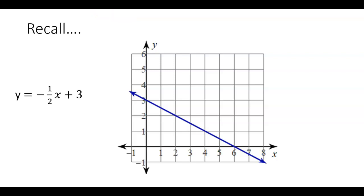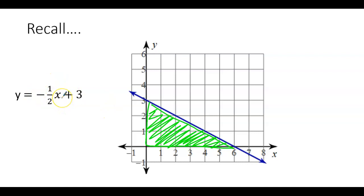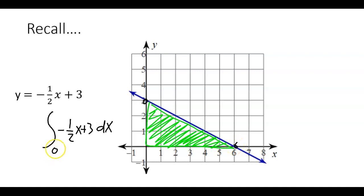Suppose I wanted you to find the area between this blue line and the x-axis — in other words, the area of this triangle. I know you could do geometry to find that area, but I want to focus on the calculus perspective. The equation of this blue line is given, so we would integrate this function with respect to x, going from x=0 on the far left to x=6 on the far right, and that gives us the green shaded region.